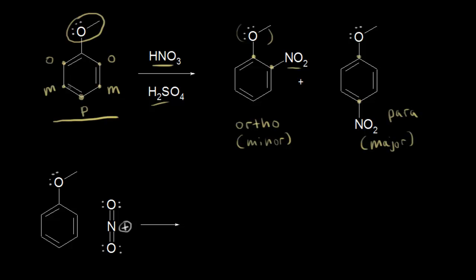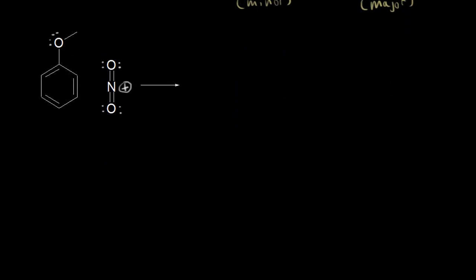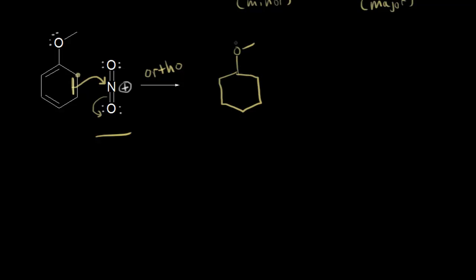Let's look at why by drawing resonance structures and thinking about the mechanism for electrophilic aromatic substitution, starting with an ortho attack. In a nitration, sulfuric acid acts as a catalyst to generate the nitronium ion from nitric acid, which functions as the electrophile. For an ortho attack, we show the nitro group adding onto the ortho position carbon. These pi electrons function as a nucleophile, attacking that positively charged nitrogen and kicking electrons off onto the oxygen.